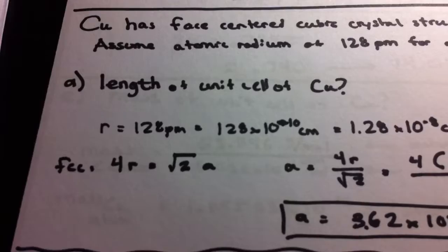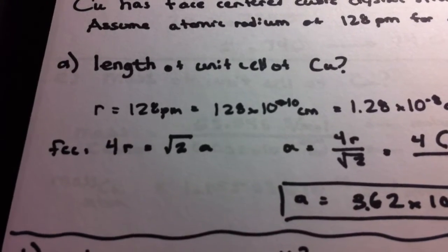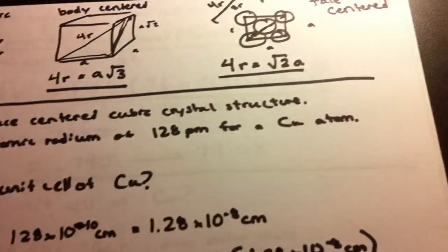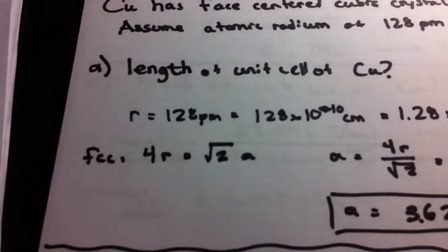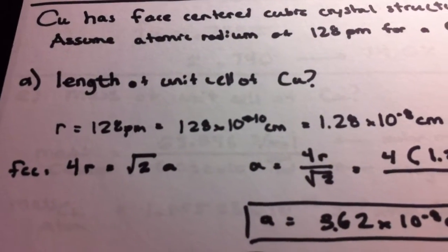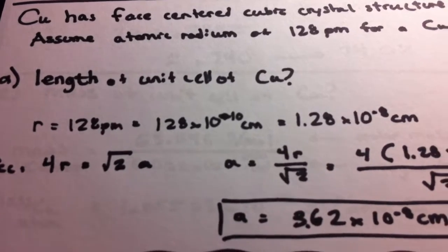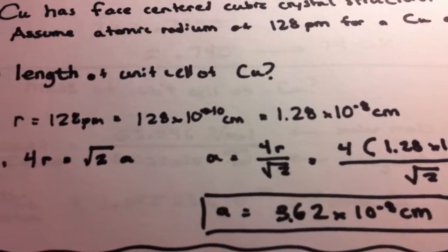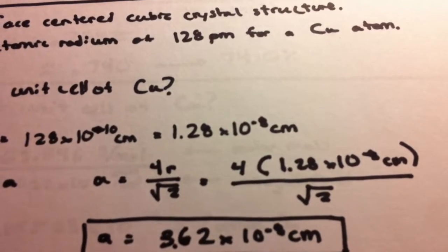So first of all, we want to find the length of the unit cell of copper. So we're given the radii, that's 128 picometers. We can transfer that into terms of centimeters since that's more convenient for a lot of people.